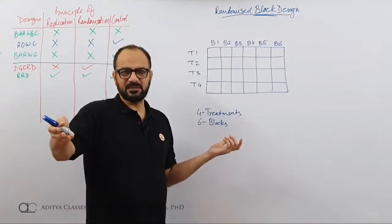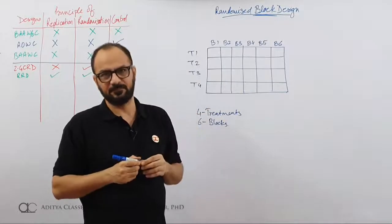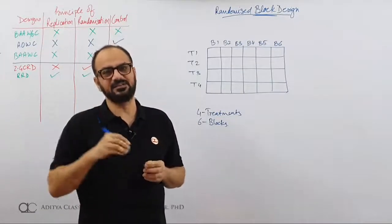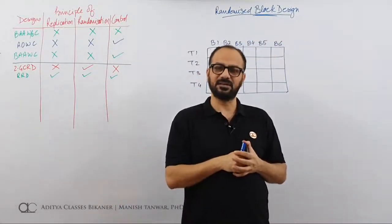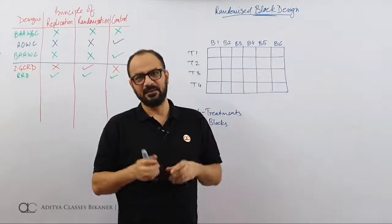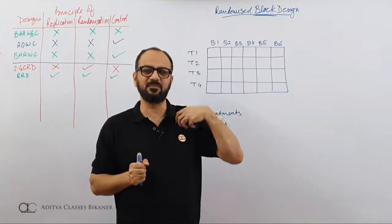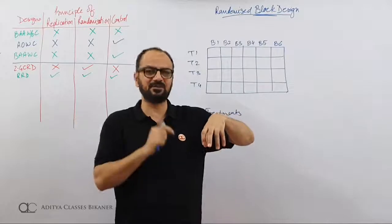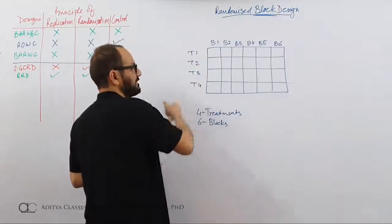Extraneous variables are outside variables that we are not studying but whose impact comes in. For example, I am studying how my coaching affects jumping, but height also has an effect — I cannot remove it. So height becomes an extraneous variable. However, if I study how height correlates with jump, then height becomes my study variable, not extraneous. It depends on the nature of the query. In our experiment, we have made 6 blocks.